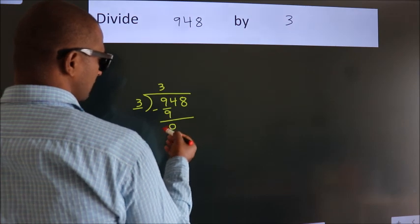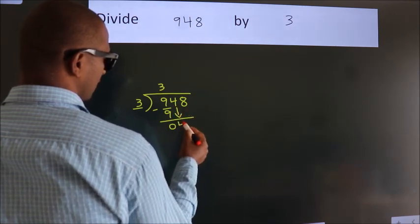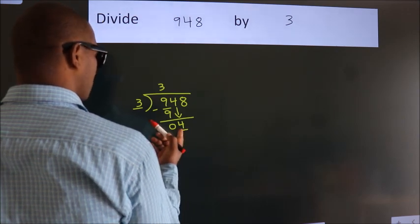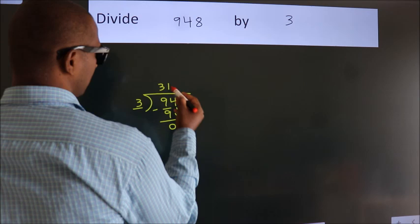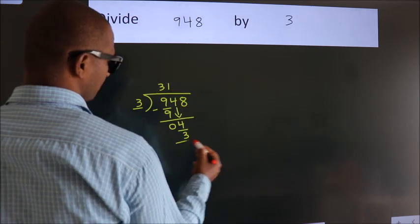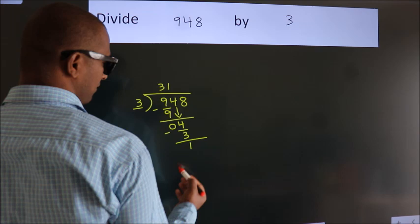After this, bring down the beside number, so 4 down. A number close to 4 in 3 table is 3 times 1 is 3. Now we subtract, we get 1.